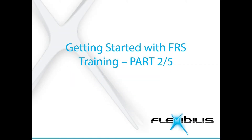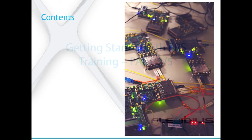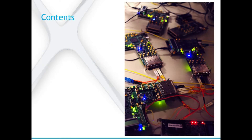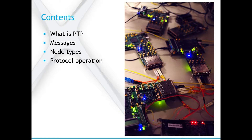This is the second part of the FRS training. In this part, I will talk about PTP, the Precision Time Protocol, and explain the IEEE standard 1588 in more depth. First, I will introduce what is the purpose of PTP. Then the messages it sends and the different node types are presented. This is followed by an introduction to its inner workings. In the end, I explain the BMC, the best master clock algorithm.